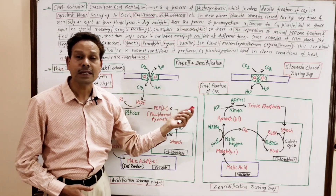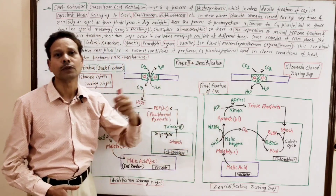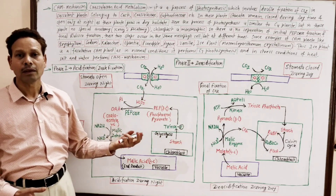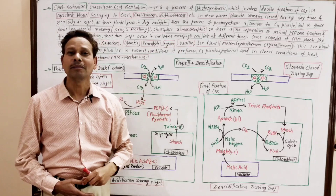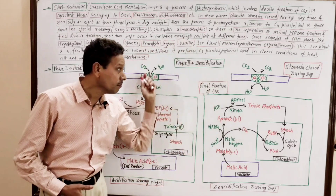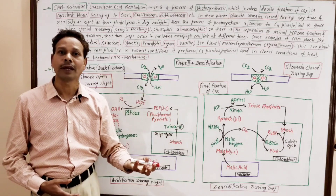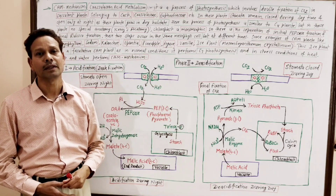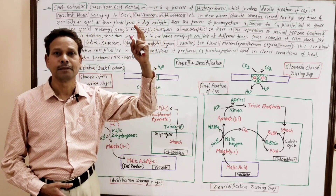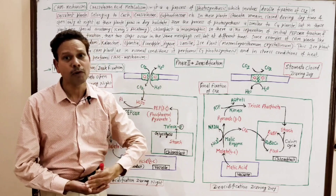In these CAM plants, Crassulaceae plants, double fixation of CO2 takes place. This CAM mechanism resembles the C4 cycle, C4 pathway, and the Hatch and Slack pathway. But note down: in C4 plants, the chloroplast is dimorphic.